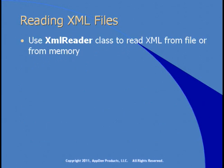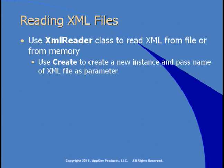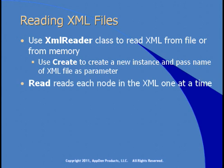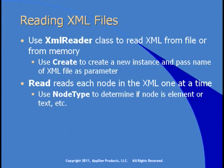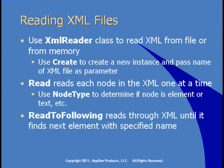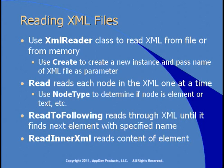To read XML files, you'll use the XmlReader class, which can read an XML file either from disk or from memory. Just as with XmlWriter, you use the Create method to create a new instance, and you pass to it the XML file you want to read. You can use the Read method to read each node in the XML one at a time. You can use NodeType to determine if the node is an element or if it's text. You can use the ReadToFollowing method to read through the XML until you find a specific element — passing in the element name, it reads until finding the next element with that name, allowing you to loop through the XML file one element at a time. To get the content of an element, you can use ReadInnerXml.